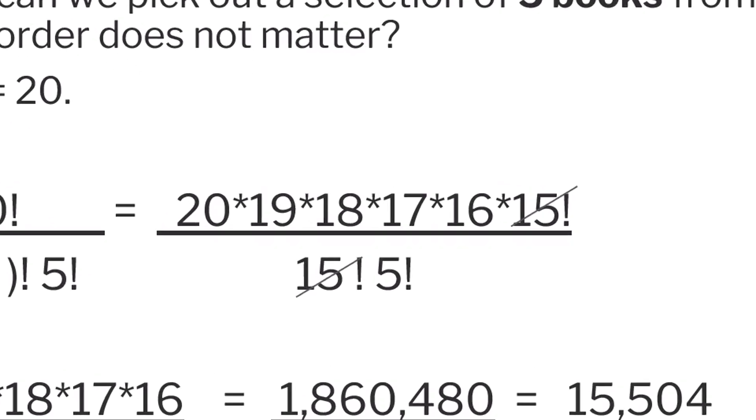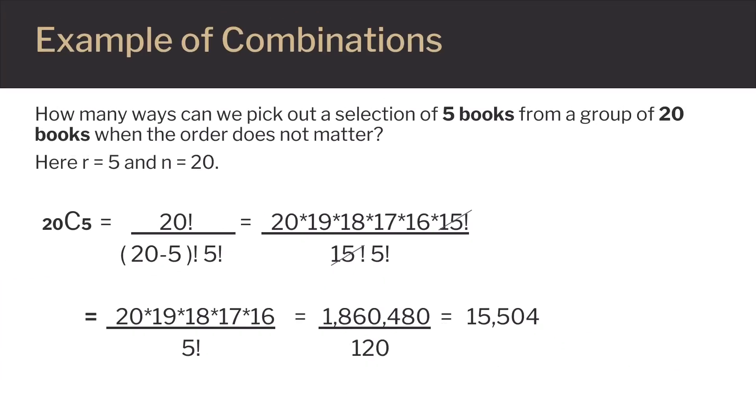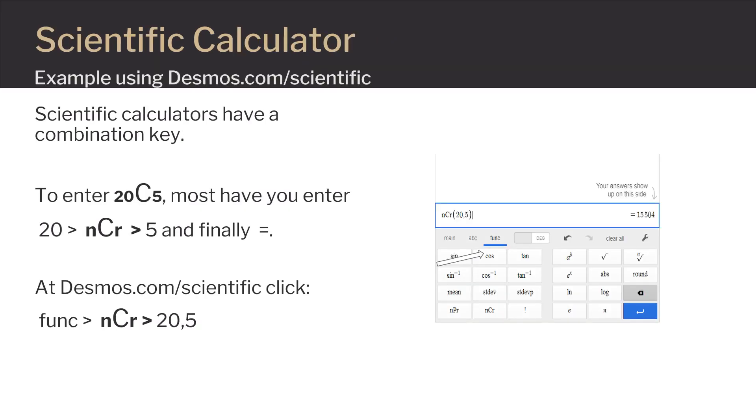So I'll stop with 16 and then tack on a 15 factorial. Now we have 15 factorial on top and 15 factorial on the bottom. So we can cancel them. This leaves 20 times 19 times 18 times 17 times 16 on the top and 5 factorial on the bottom. Now we can do the multiplication on the top and bottom and finally divide to get an answer of 15,504. Looking at the last example you can see there were a lot of computations involved in finding a combination.